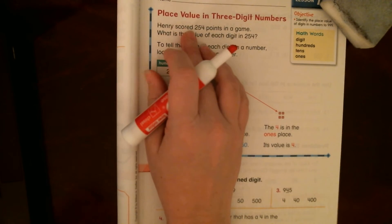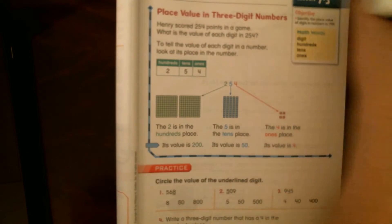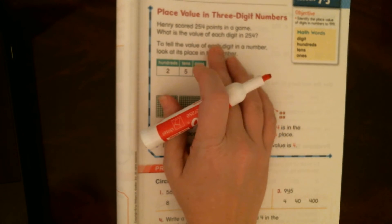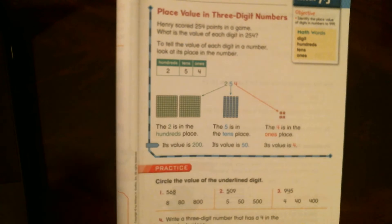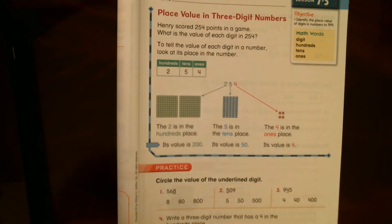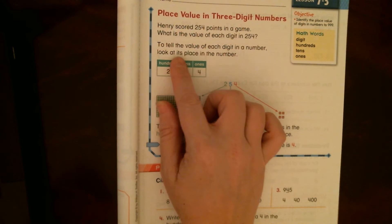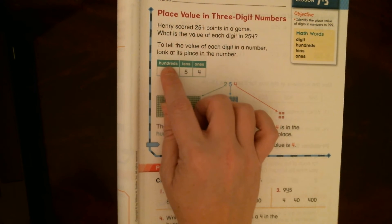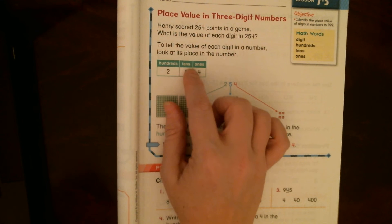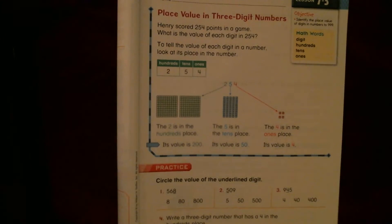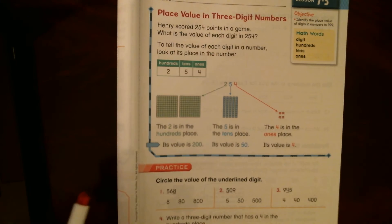All right, so Henry scored 254 points in a game. What is the value of each digit in 254? To tell the value of each digit in a number, look at its place in the number. The place is where it is, whether it's in the hundreds place, the tens place, or the ones place. So that's what they did. They took their place value chart.